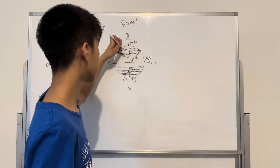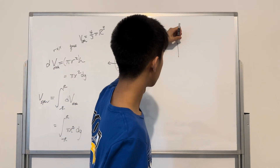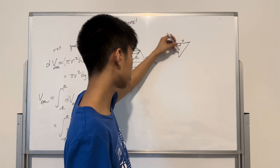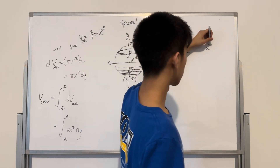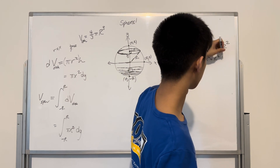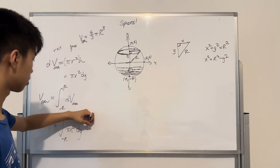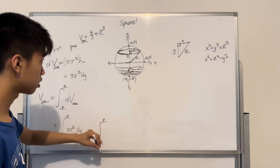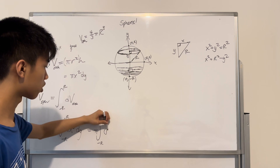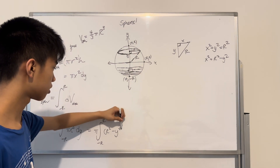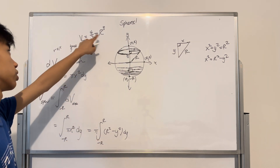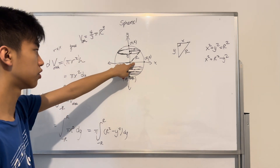We don't know what to do with the x variable since we're integrating with respect to y, but there's a handy trick. Remember the right triangle we drew: x is the x-coordinate, y is the y-coordinate, and r is the hypotenuse. By the Pythagorean theorem, x squared plus y squared equals r squared, so x squared equals r squared minus y squared. We substitute that in, bringing pi out for convenience, giving us the integral of (r squared minus y squared) dy — and keep in mind r is a constant.